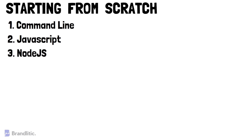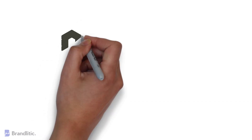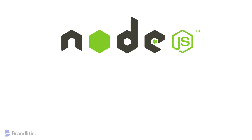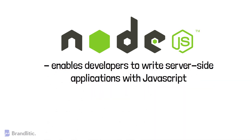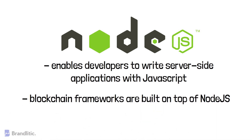3. Node.js. Node.js is an open-source, cross-platform JavaScript runtime environment that executes JavaScript code outside of the web browser. Node.js enables developers to write server-side applications with JavaScript. The breadth of frameworks which run on Node.js allows any form of application to be created and deployed on top of a node. Not many people know this, but many blockchain frameworks are built on top of Node.js.